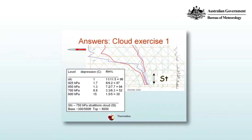Stratus cloud is stratiform cloud that forms near the surface. Within certain tolerances, the cloud base is about 300 to 500 feet and the top at about 8,000 feet — so that's pretty thick stratus cloud for this particular environment.